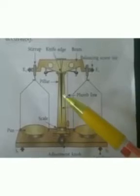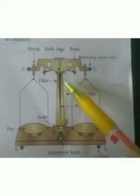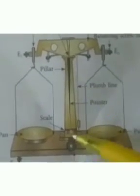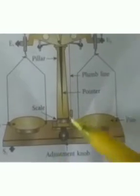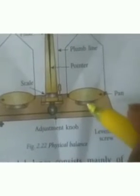A physical balance consists mainly of a beam and two scale pans. The beam made of brass or aluminum is light and strong. It has one pointer and three knife edges. Two pans of equal mass are suspended at the two ends of the beam from the other two knife edges. The pointer moves over the scale fixed at the base of the pillar. The balance is kept in a glass case to protect it from dust and save the balance from being disturbed by air current during its use.